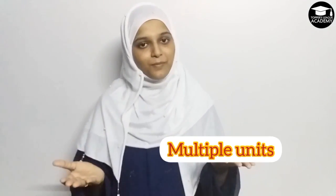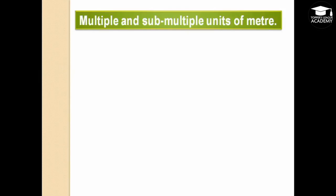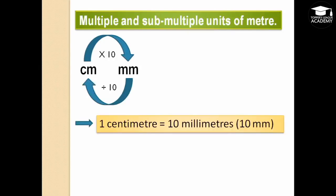In the SI system of measurement, the unit for length is meter. Its multiple and submultiple units are related to each other by the power of 10. For example, 1 centimeter equals 10 millimeters, and 1 meter equals 100 centimeters. When we increase by 10 we get 1 centimeter equals 10 millimeters, and when we decrease by 10 we get back 10 millimeters equal to 1 centimeter.